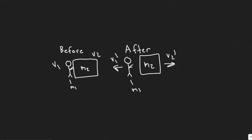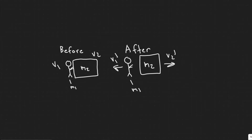In this problem, we're told a 130-kilogram astronaut, including spacesuit, acquires a speed of 2.5 meters per second by pushing off with his legs from a 1,700-kilogram space capsule. Part A: What is the change in speed of the space capsule? If the push lasts 0.5 seconds, use the position of the capsule before the push as the reference frame.